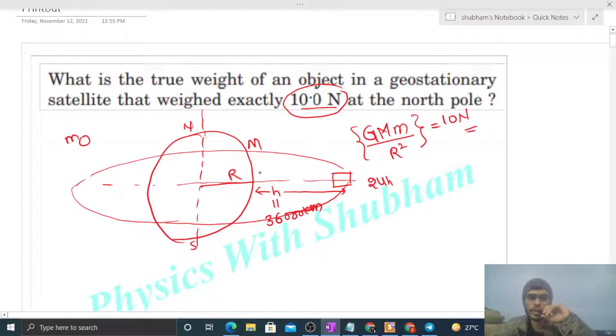So what happens is that if we stand on the Earth's surface and observe, then this satellite appears stationary because it rotates along with the Earth. So if we place this object in this geostationary satellite, then what is the true weight?